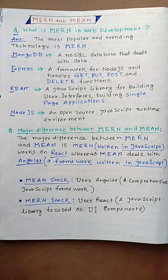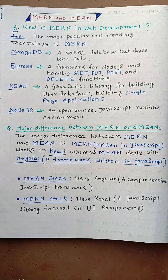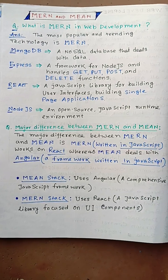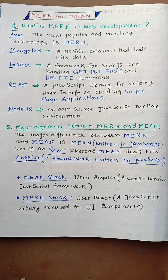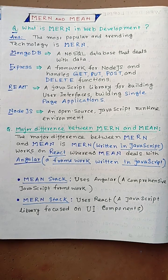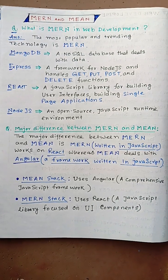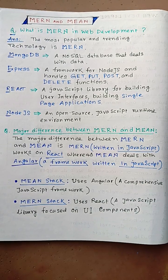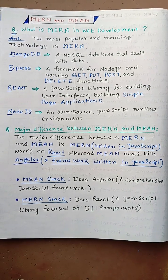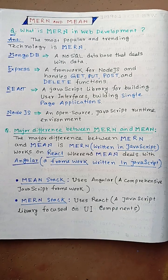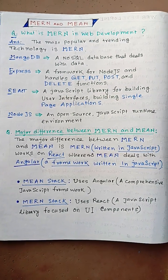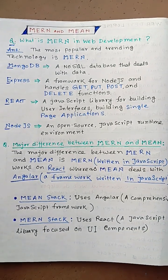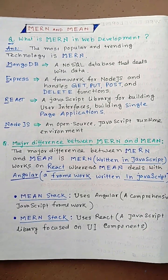The major difference between MERN and MEAN is that MERN uses React, whereas MEAN deals with Angular, a framework written in JavaScript. MEAN stack uses Angular, a comprehensive JavaScript framework, while MERN stack uses React, a JavaScript library focused on user interface components.